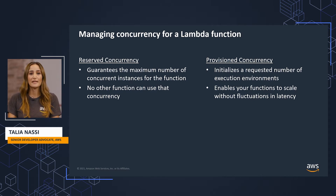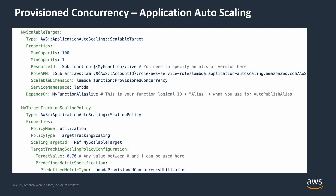By allocating provisioned concurrency before an increase in invocations, you can ensure that all requests are served by initialized instances with very low latency. If you don't know what capacity to set or you need some assistance in setting capacity, another option is application auto-scaling. You can use this through the CLI or CloudFormation, but not directly in the Lambda console.